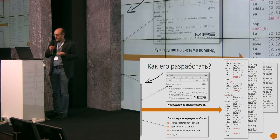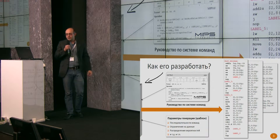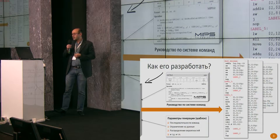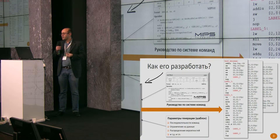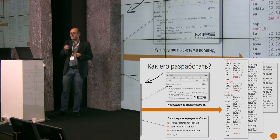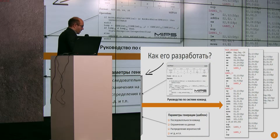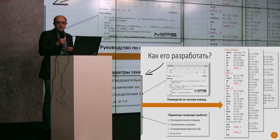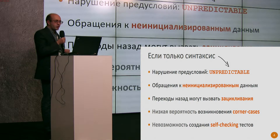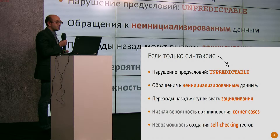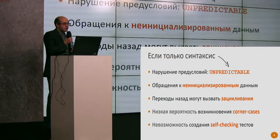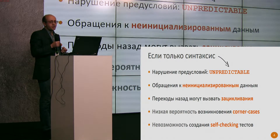Usually in our experience, in interaction with Russian companies, this information is syntax — it's about the ISA operations, and there is some additional attribute type information. Randomized technologies are used to process this information. The problem is that if you use only syntax information, if you do not use the semantics, you can always face a situation with unpredictable behavior.